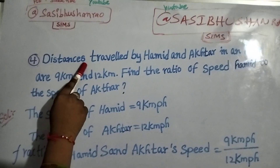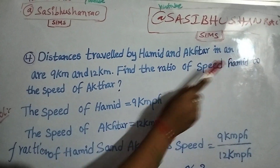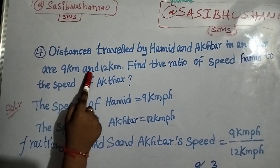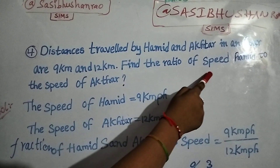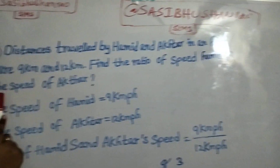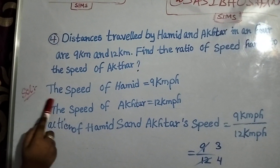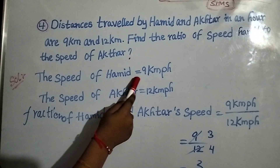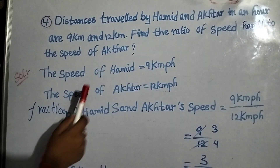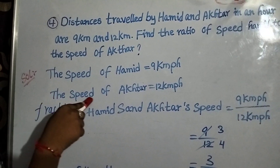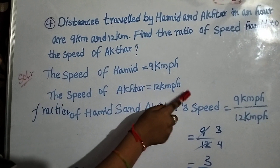we are taking the distance driven by Hamid and Akhtar in an hour, which are 9 km and 12 km. Find the ratio of speed of Hamid to speed of Akhtar. The speed of Hamid equals 9 km per hour and the speed of Akhtar equals 12 km per hour.